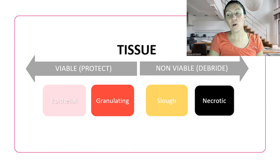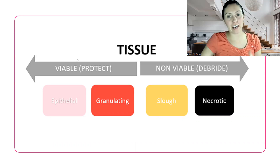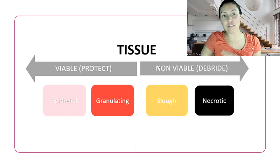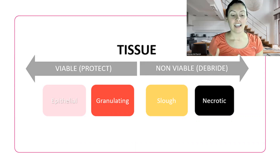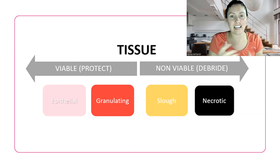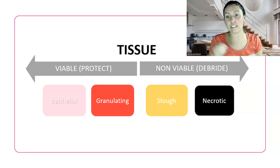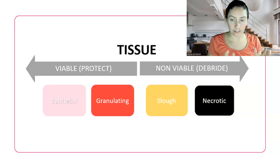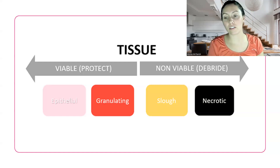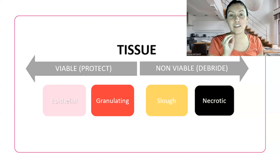So viable tissue — what we do is we protect viable tissue. Non-viable tissue, we need to debride. It's dead tissue. If you're not treating non-viable tissue, the wound will never heal. You're literally treating dead tissue, so if you're not using something to debride that tissue, it needs to be removed. You need to use one of the forms of debridement. I'll put a link somewhere here on this video that has all the different types of debridement you can use. There are lots of different things, but you need to use one of them.